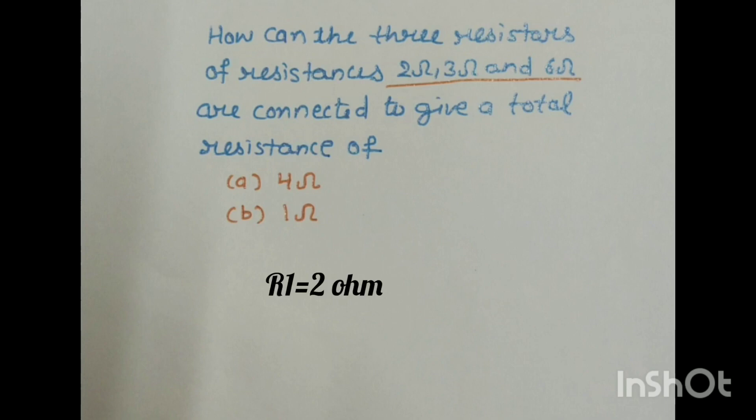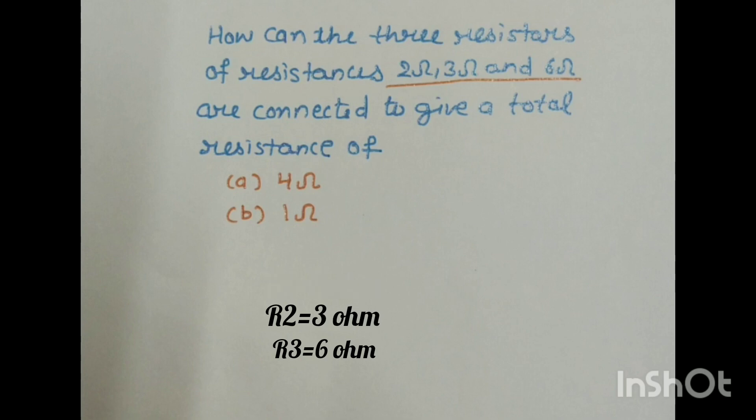First we will give names: R1 is 2 ohm, R2 is 3 ohm, and R3 is 6 ohm. Now I am showing you some structures of the circuit diagram. What you have to do is screenshot these diagrams and make them in rough.